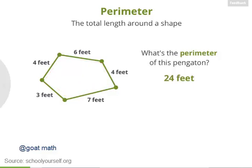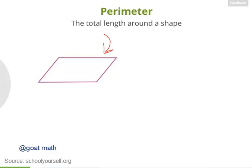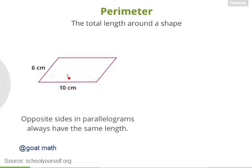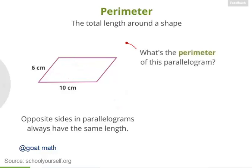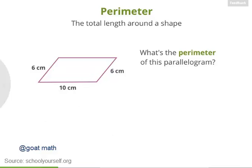Many times you won't be told the lengths of all the sides — you might have to figure some of them out for yourself. For example, here's a parallelogram. Suppose this side is 6 centimeters long, while this side is 10 centimeters long. For every parallelogram, opposite sides always have the same length. So this side is also 6 centimeters, and this side is 10 centimeters. The perimeter is 2 times 6 plus 2 times 10, or 32 centimeters.